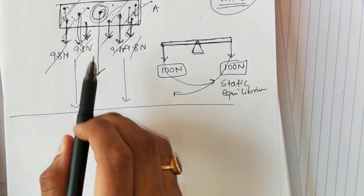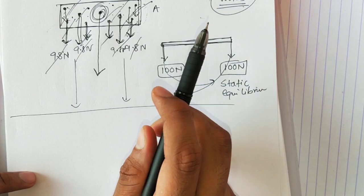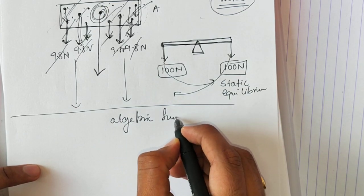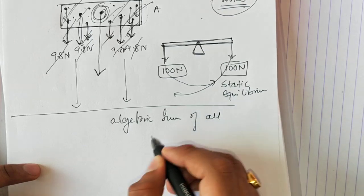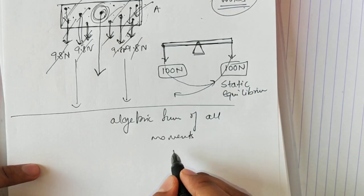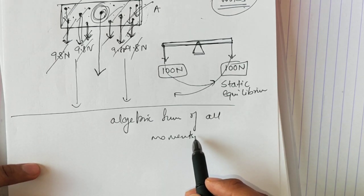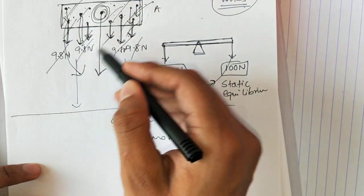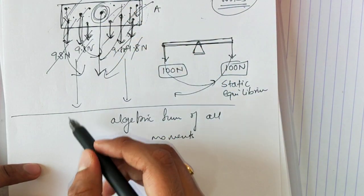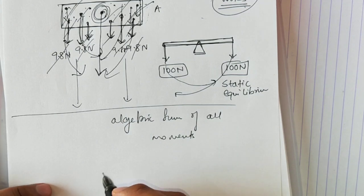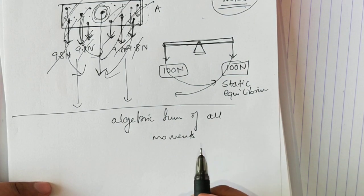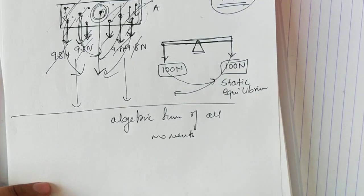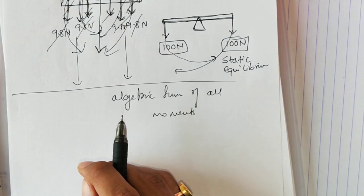This point is called the center of gravity — where the actual force of gravity applies. The definition says: the center of gravity of a body is a point about which the algebraic sum of all the moments of all the particles of the body is zero. Algebraic sum is zero means all the forces get cancelled with each other. The entire weight of the body can be considered to act on this point, and hence this point is called the center of gravity.